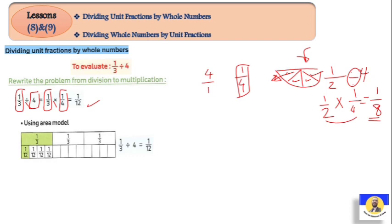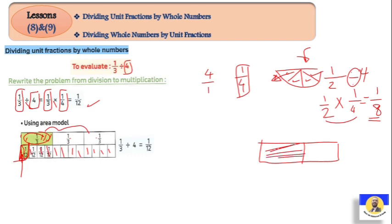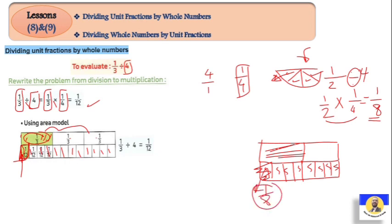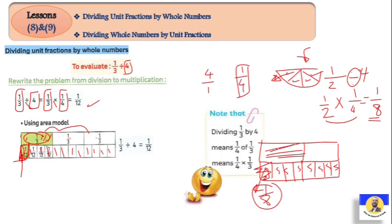Let's do the area model. The third part means we start with 3 parts, take 1 part, and divide all parts into 4 parts. So if 3 parts are each divided into 4, we count: 1, 2, 3, 4, 5, 6, 7, 8, 9, 10, 11, 12 — we have 12 parts total. When we take one third divided into 4 parts, we get 1 over 12. The area model confirms: dividing 1 over 3 by 4 means one fourth of 1 over 3 equals 1 over 12.